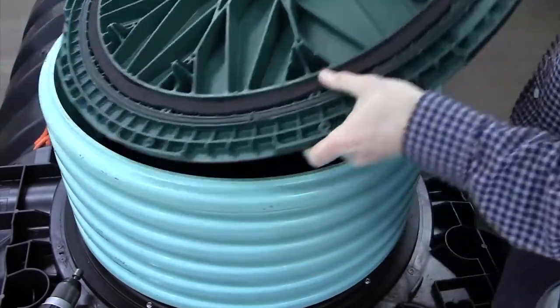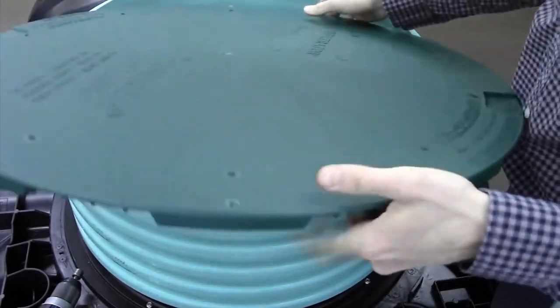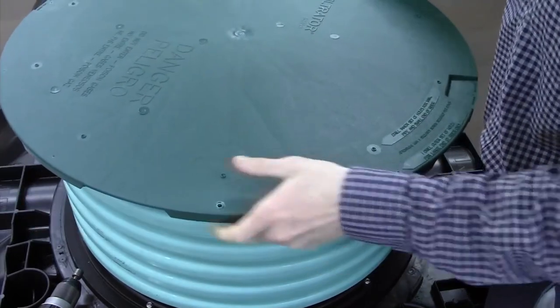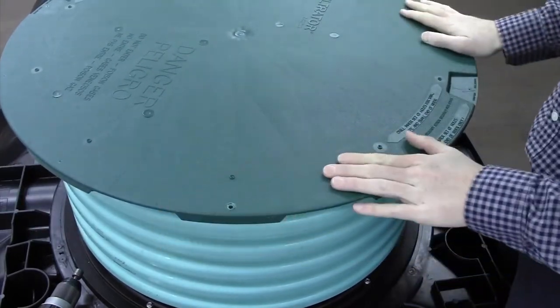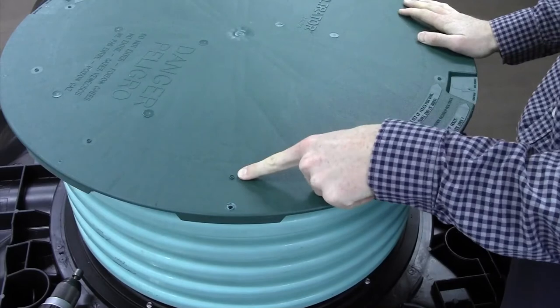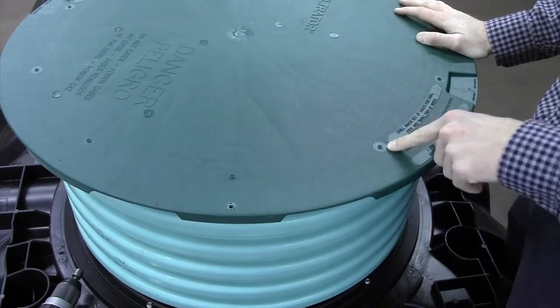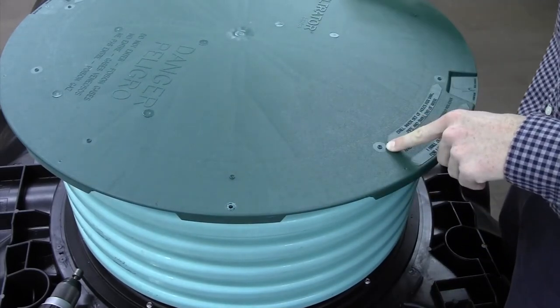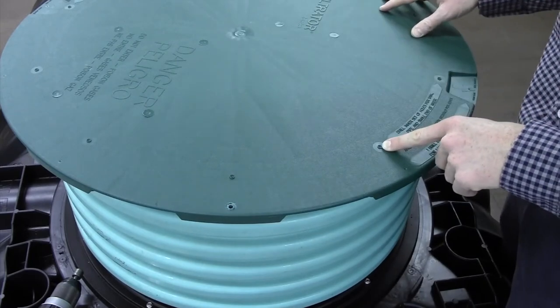Once the gasket's applied, flip the lid over. Make sure the lid fits well onto the riser. If you notice, there's an outer and an inner pilot hole on the lid. Use the inner pilot holes when fastening the screws through the lid to the riser.